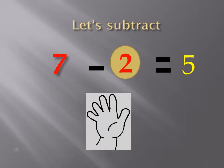Perfect. Another example. Seven minus two. Where is the smaller number here? Yes. Circle two.